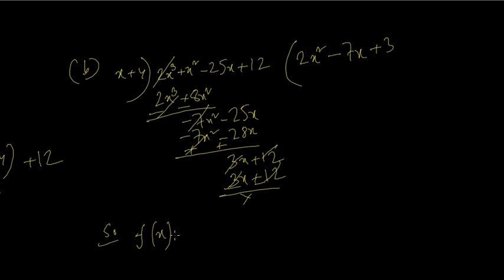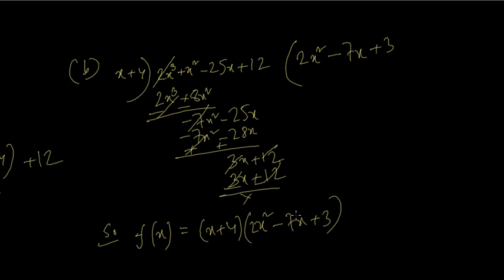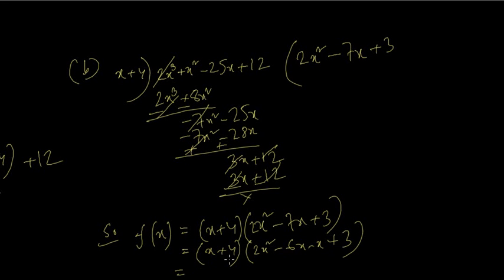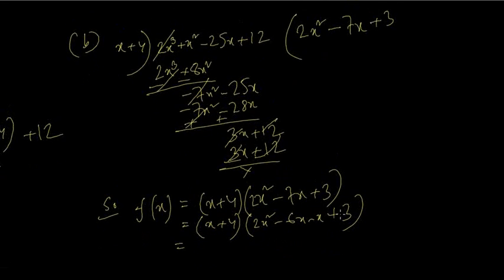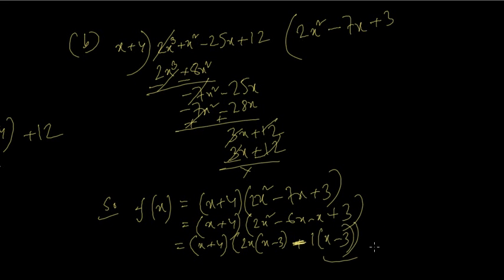So f(x) equals (x plus 4)(2x² minus 7x plus 3). Remember, they said factorize completely, so this quadratic has to be factorized by middle term break. 2 times 3 is 6, so we need minus 6x minus x. Taking 2x common gives (x minus 3), and taking minus 1 common also gives (x minus 3). So the three factors are (x plus 4)(x minus 3)(2x minus 1).